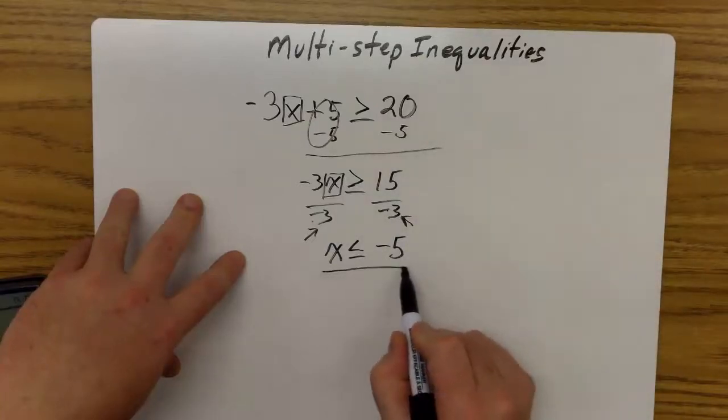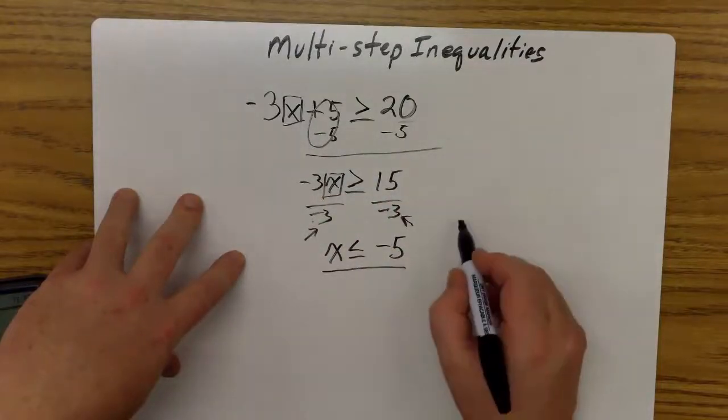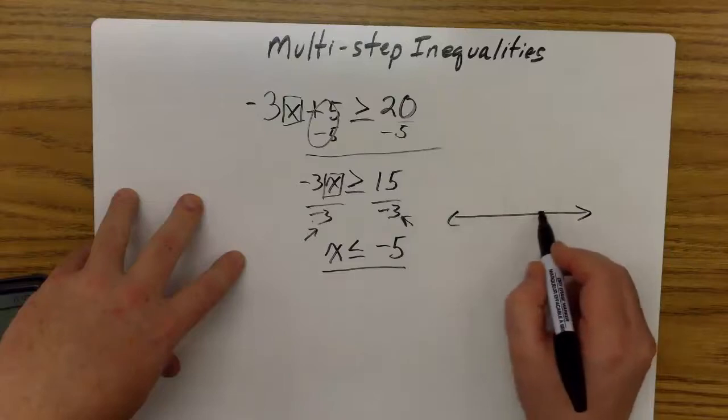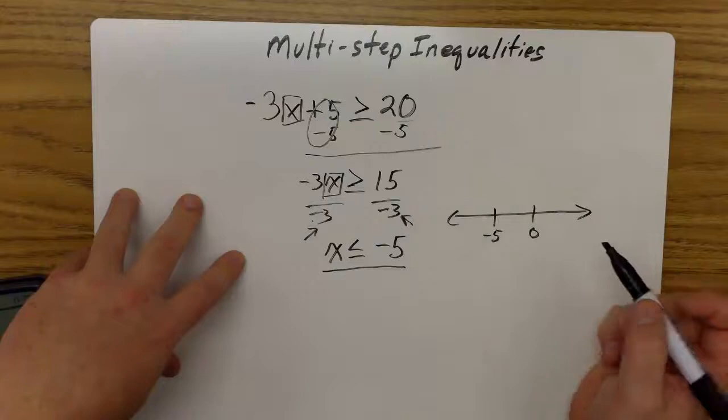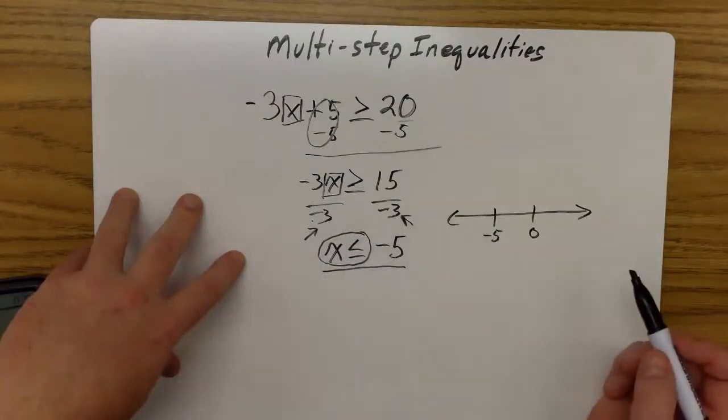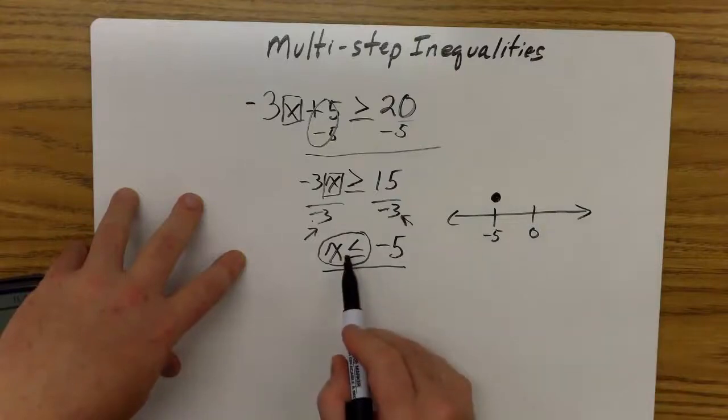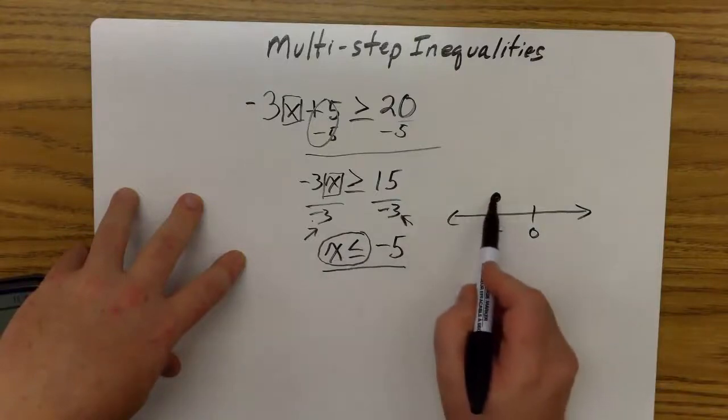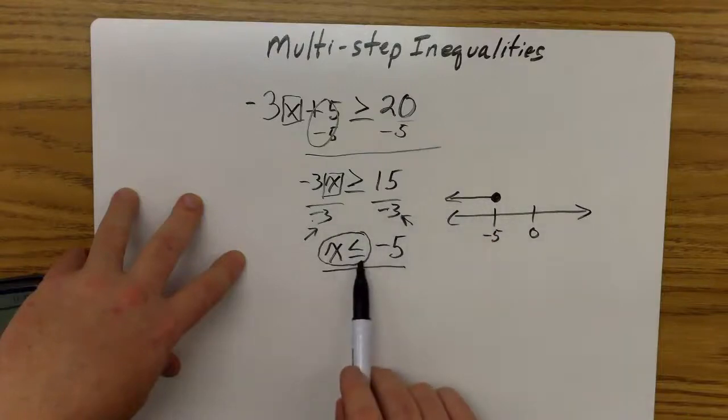Now I'm going to go ahead and graph this solution, which will give me all the solutions from the original problem. On my number line, I'm going to identify 0 and I'm going to identify -5. I'm looking for all the x values that are smaller than or equal to -5. So the equal to sign says start with a closed dot or closed circle. And I'm looking for numbers that are smaller than, so that would be arrow to the left.